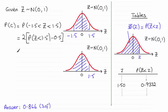So what we've got then is two times all of 0.9332 minus 0.5. And if you work that out, you end up with 0.8664.